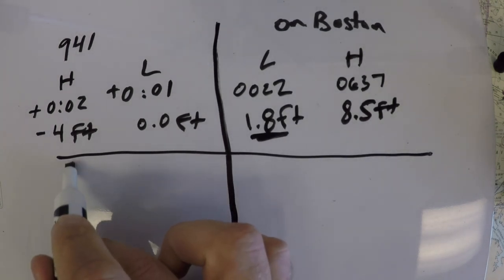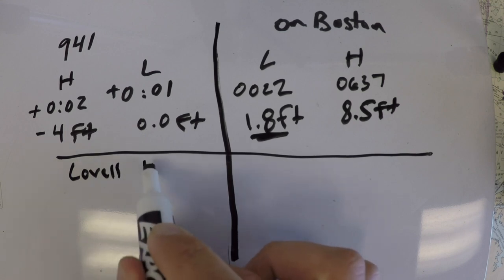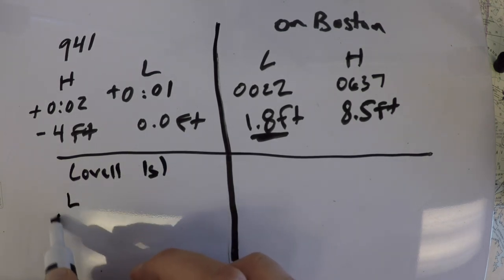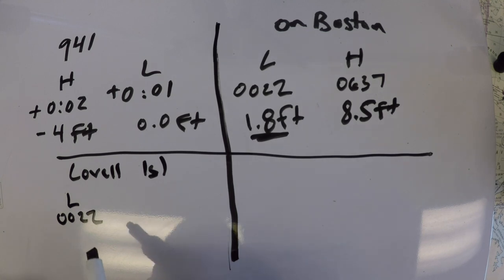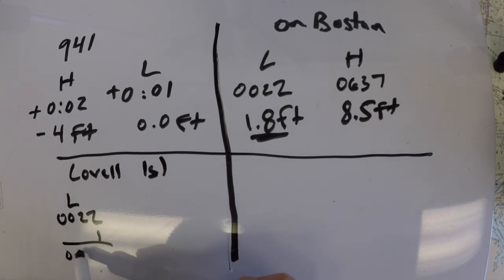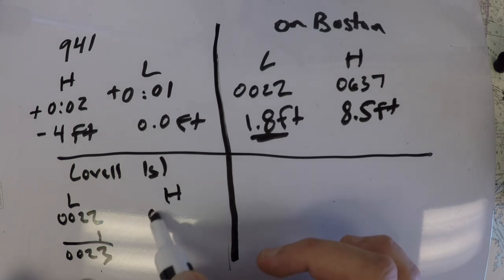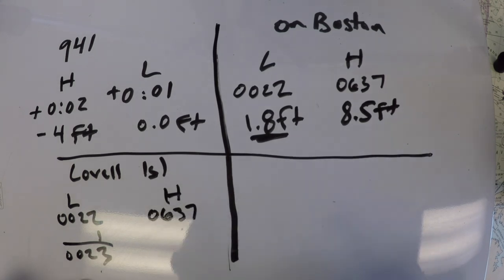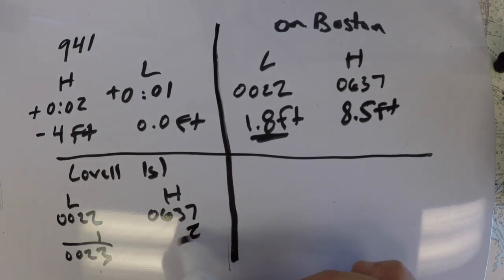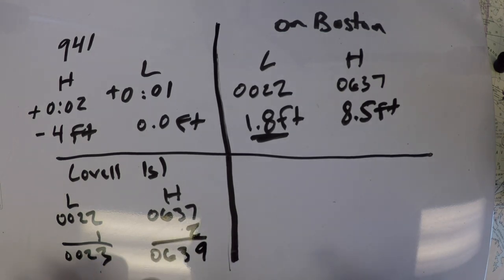So to make the corrections at Lovell Island, we're going to take the low tide of 0022 and add the one minute to get 0023. For the high tide, we'll take the 0637 and add two minutes to the high. So that makes it 0639. So we get our times there.